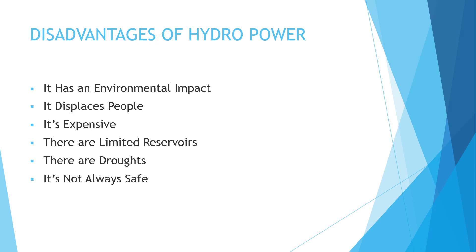The disadvantages of hydropower are: it has an environmental impact, it displaces people — when creating a hydropower station we not only affect the environment but also force people to move from one place to another. It is also expensive to construct a hydropower plant, there are limited reservoirs and dams, there are droughts as not every place has sufficient water, and hydropower plants are not always safe and can cause injuries.